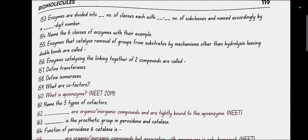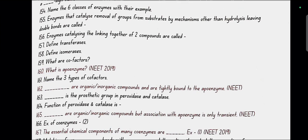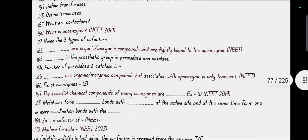Enzymes catalyzing removal of groups from substrate by mechanisms other than hydrolysis leaving double bonds are called lyases. Enzymes catalyzing the linking together of two compounds are called ligases. Define transferases: Enzymes catalyzing a transfer of a group G other than hydrogen between a pair of substrates. Define isomerases: includes all enzyme catalyzing interconversion of optical, geometrical or positional isomers.